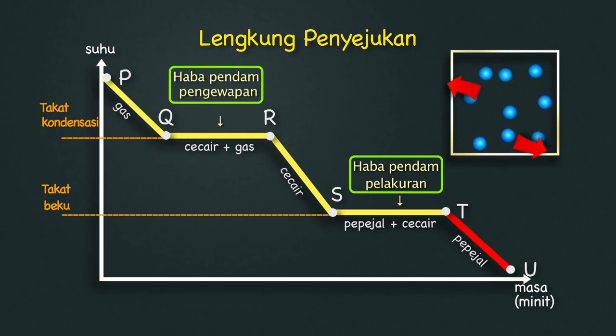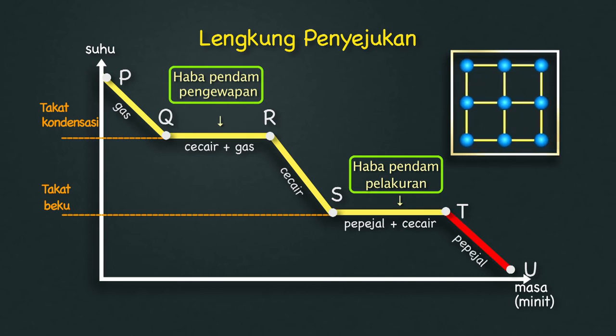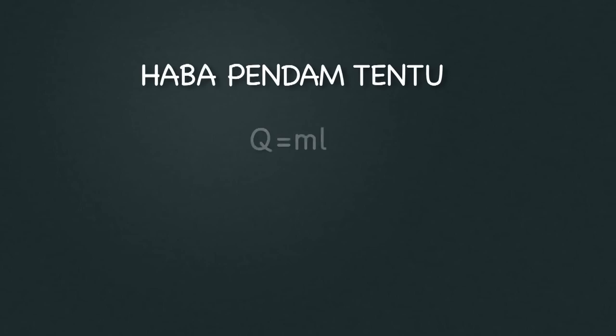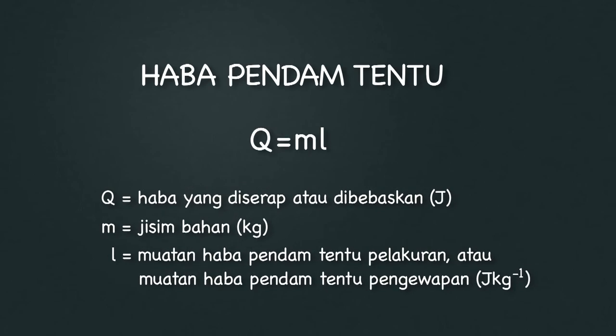EU — Haba dibebaskan menyebabkan tenaga kinetik berkurang, suhu pepejal menurun. Terdapat formula yang boleh menyelesaikan masalah berkaitan haba pendam tentu, iaitu Q sama dengan ML.